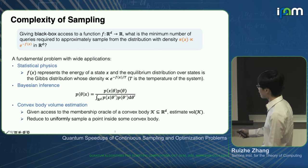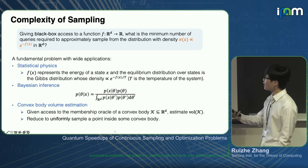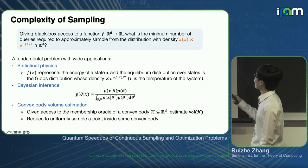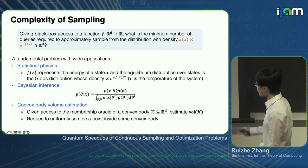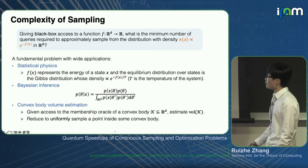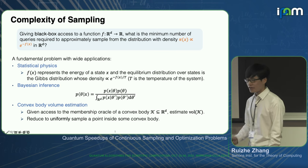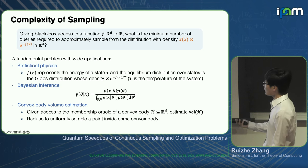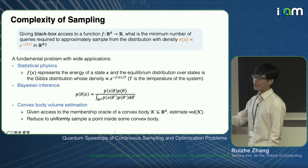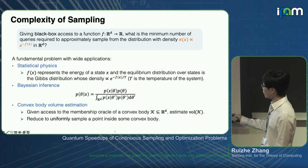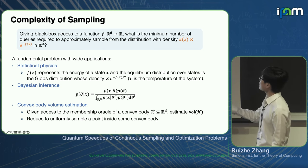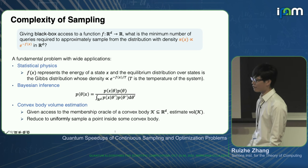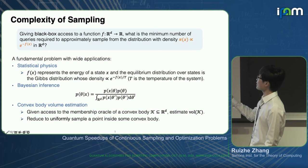For example, in statistical physics, f of x represents the energy of the state, and these problems correspond to Gibbs sampling problems and partition function estimation. In Bayesian inference, we need efficient samplers to sample from the posterior distribution. In theoretical computer science, we want to estimate the volume of a convex body, which reduces to uniformly sampling a point inside a convex body. We want to know if there exists any quantum advantage to solve this kind of problem.